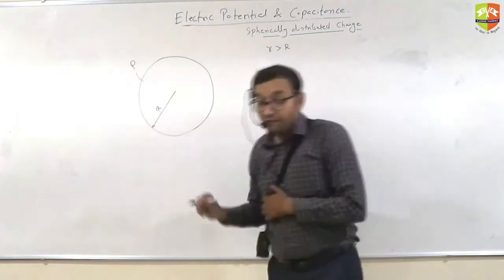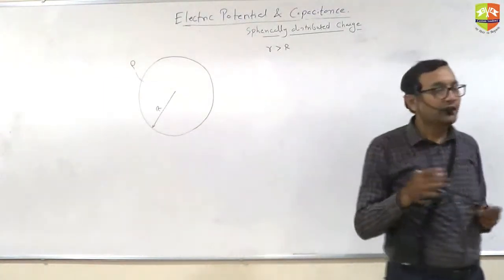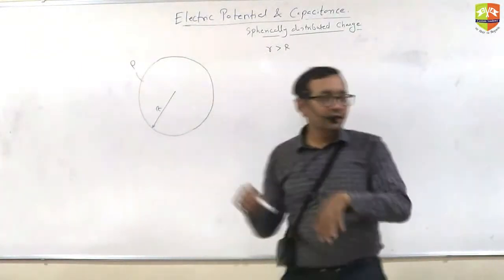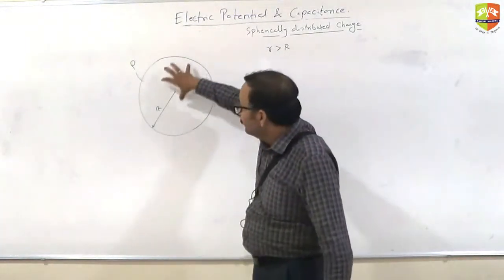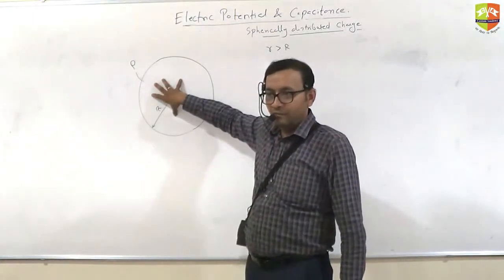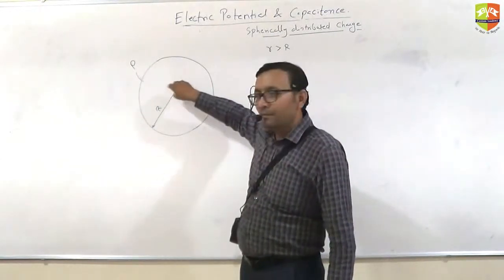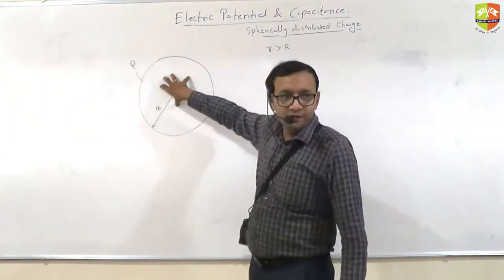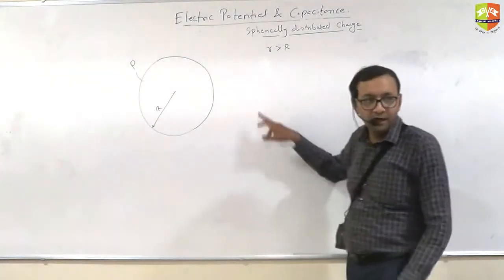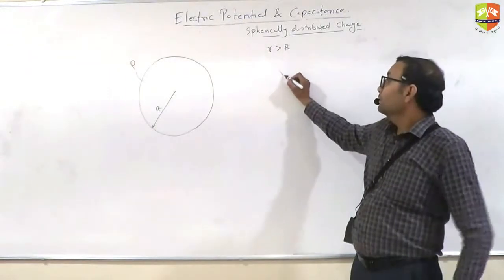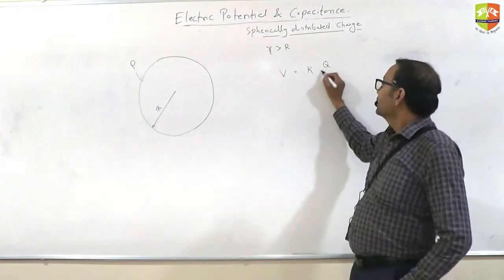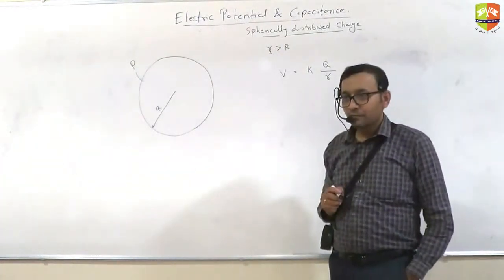The potential is if point lies outside then the sphere will behave like a point charge located in the center. Because you can consider a spherical object as if it is made of spherical shells of different radii. So every shell will behave like a point charge. So everything will behave like a point charge if point is outside. So potential will be at a distance small r, potential will be k q by r.